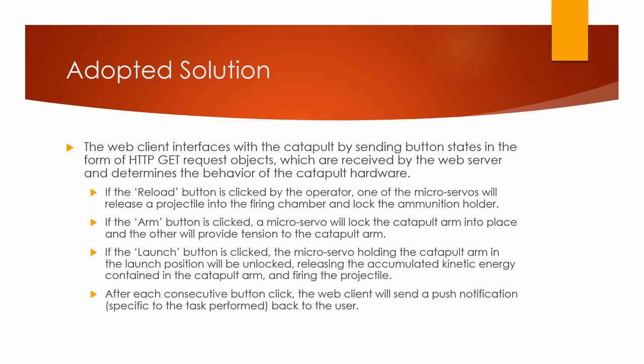If the reload button is clicked by the operator, one of the micro servos will release a projectile into the firing chamber and lock the ammunition holder. If the arm button is clicked, a micro servo will lock the catapult arm into place and the other will provide tension to the catapult arm.